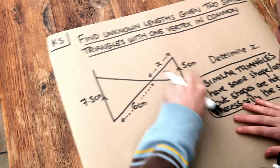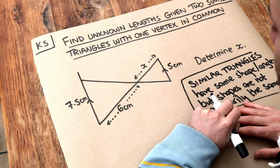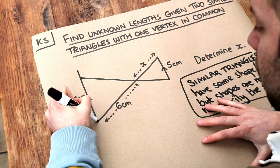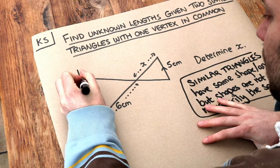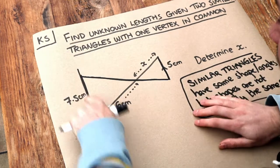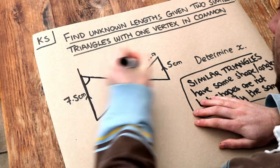So in this case the triangles actually have the same shape and the reason we can see that is if we look at these parallel lines. Do you remember alternate angles or z angles? So can you see that this here is a z and when we have z angles like that this angle will be the same as this angle.